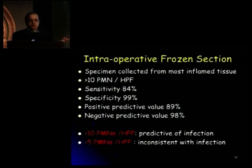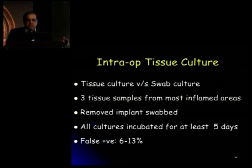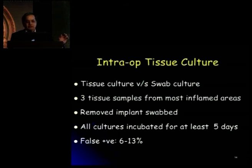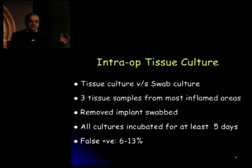Frozen section, although widely used, again has problems in these gray areas. Intraoperative tissue cultures are extremely important — you need to send tissues as well as swabs during surgery. It's advisable to send a minimum of 3 swabs from the most inflamed areas for culture. Removed implants, especially at the interfaces, ought to be swabbed and sent for culture. All cultures have to be incubated for at least 5 days, and if nothing grows, a prolonged culture may be necessary for certain low-virulence organisms. The false positive rate reported is about 6 to 13%.